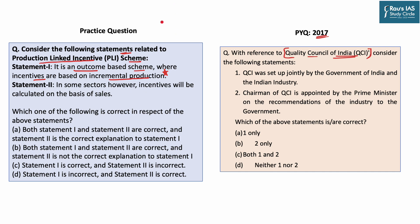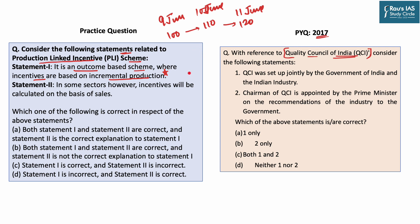Incremental production means: on 9th June, production was 100 units; on 10th June, 110 units; on 11th June, 120 units. If this is a consistent trend for a company or industry, then yes, production linked incentives or benefits will be given to that industry. So the first statement is correct. In some sectors, however, incentives are calculated on the basis of sales.